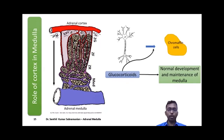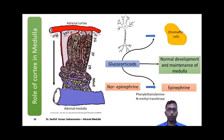The chromaffin cells, considered modified neurons, lack proper dendrites and axons. This morphological change in chromaffin cells is brought about by the presence of glucocorticoids. Further, the presence of cortisol increases the action of the enzyme PNMT, which converts norepinephrine to epinephrine.